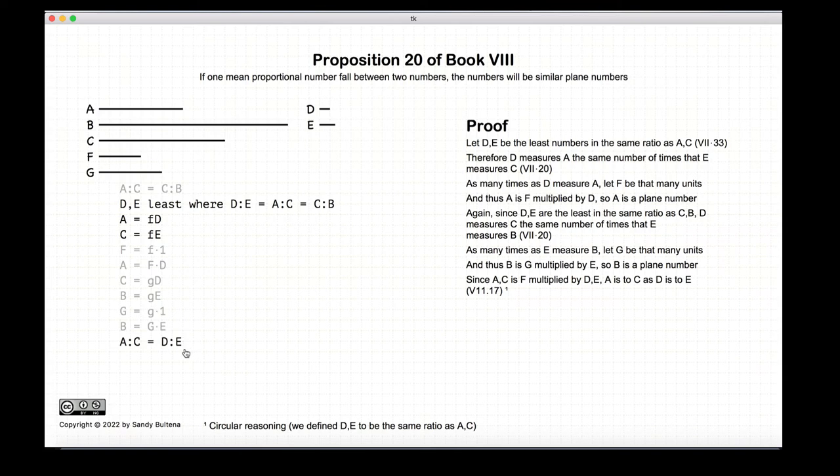This is in the proof, but it's a bit of circular reasoning. He states that because of this, that, and the other, that AC, the ratio of AC is equal to the ratio of D to E. But in actual fact, we started off with constructing the ratio of D to E so that it equaled A to C. So yeah, a little circular reasoning there.